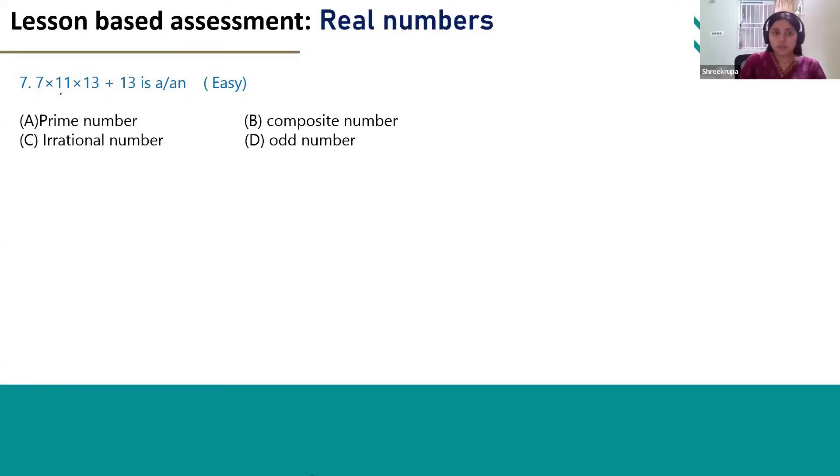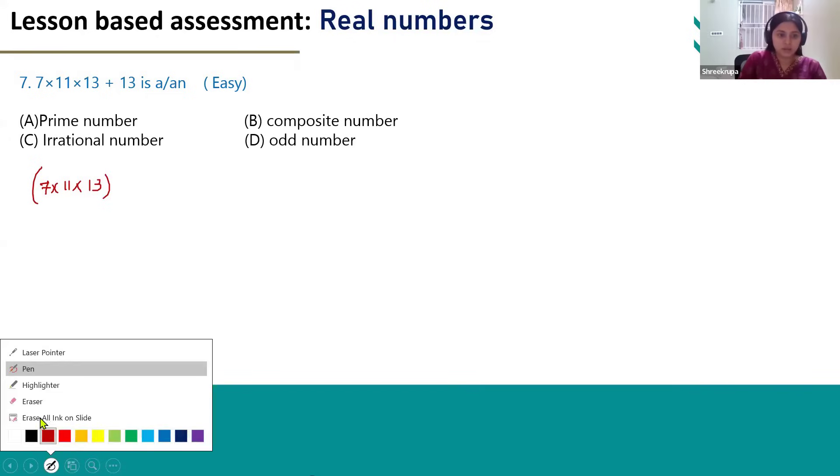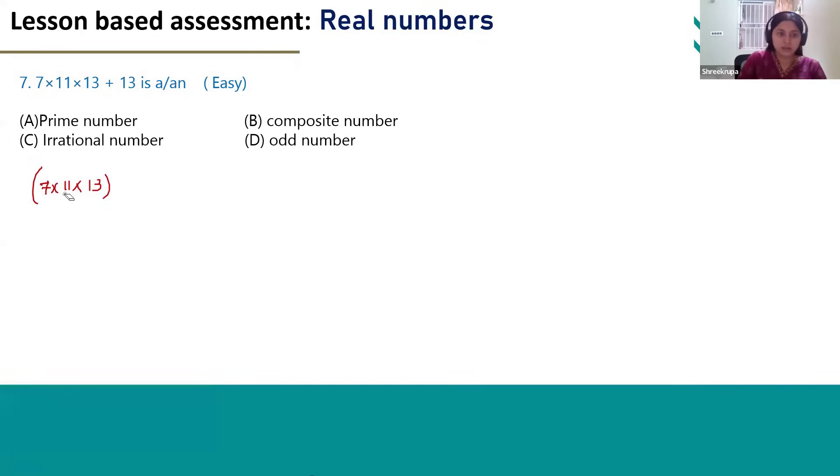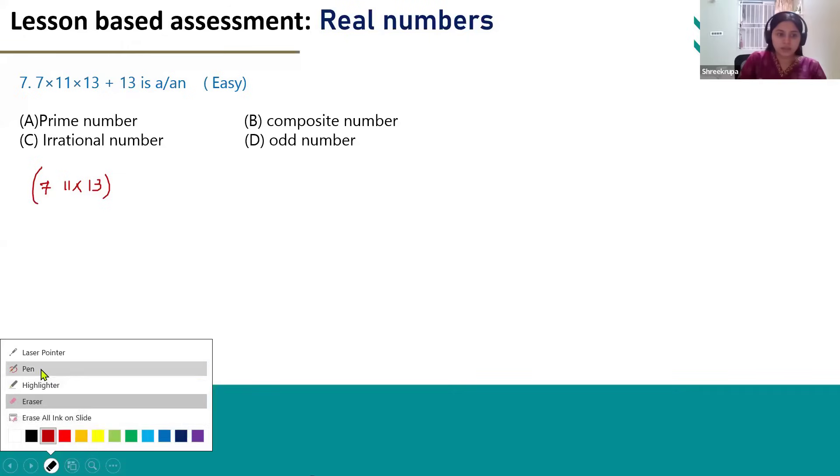7 x 11 x 13 plus 13. We will get the product of 7 x 11 and 13 as 7 x 11 x 13. We should multiply these three numbers then we have to add 13 to it. To the product, we have to add 13.